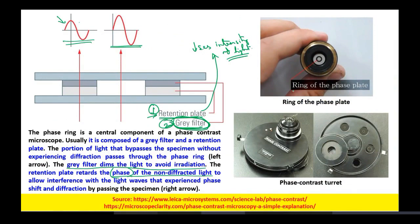This is the phase plate or ring of the phase plate — when you remove the objective, it looks like a ring. The phase contrast turret is the condenser, and for each objective, the annulus differs markedly. Depending on which objective you use for phase contrast, there will be different vertical dimensions for the stop filter.